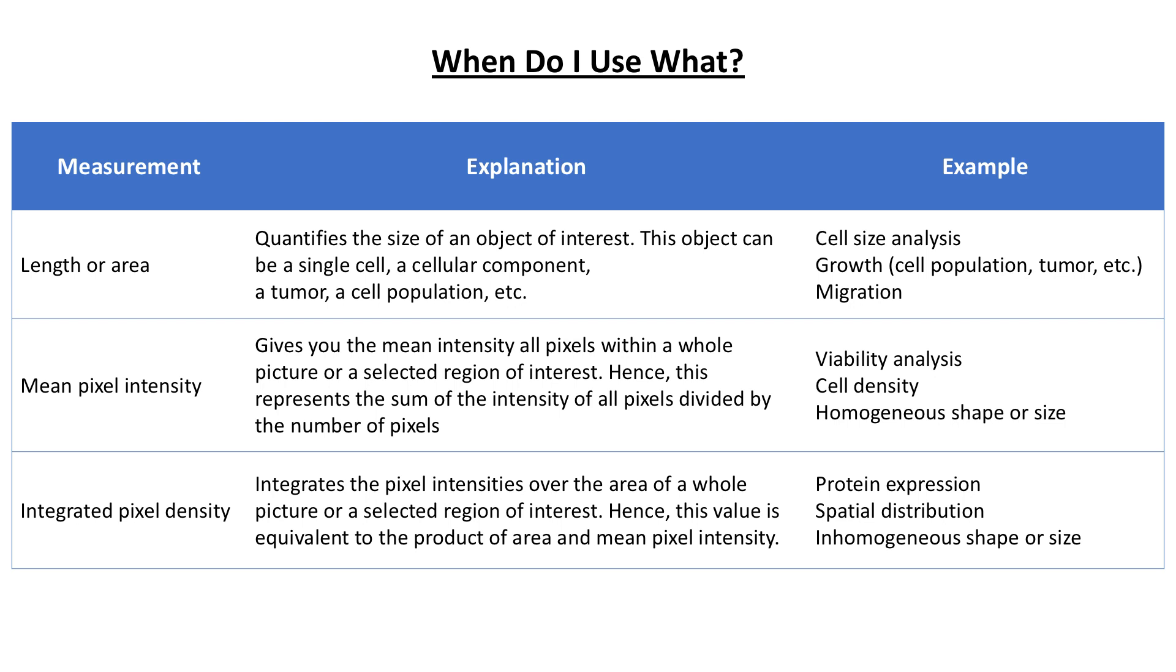The mean pixel intensity on the other hand is the mean of all pixel values within an image or a region of interest and is usually used for quantification independently of the size or when the size of the ROIs are very similar.